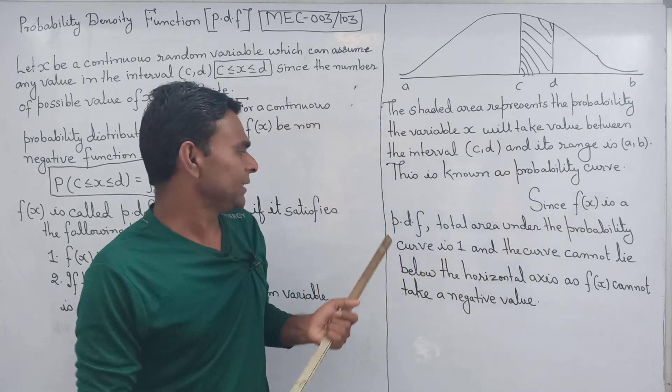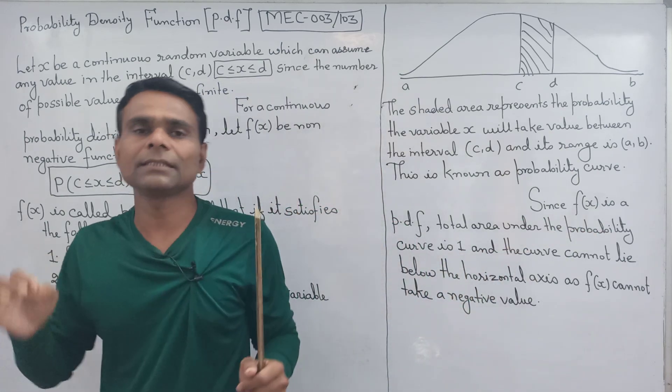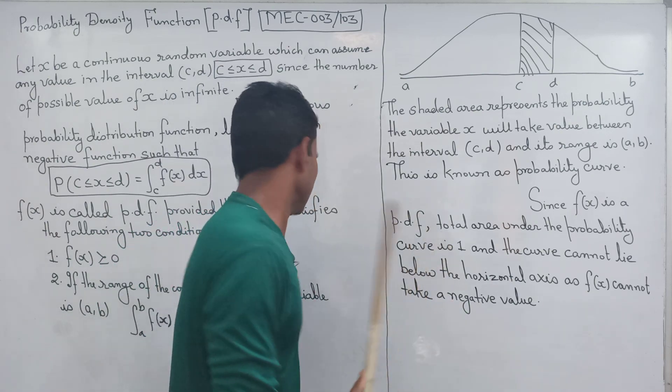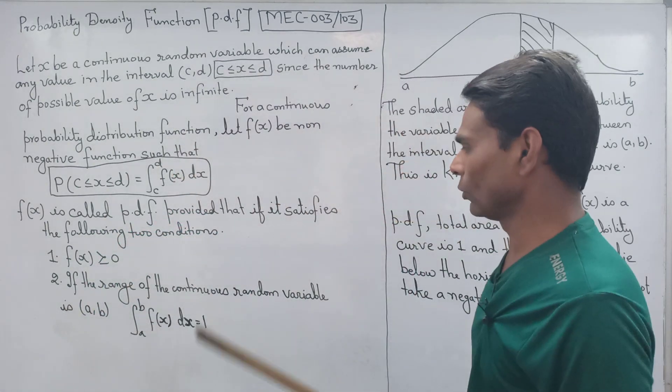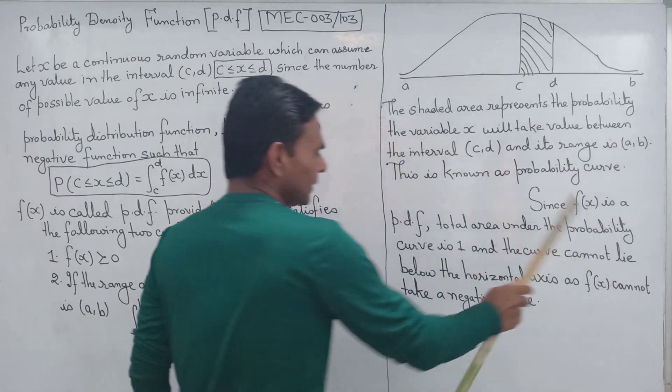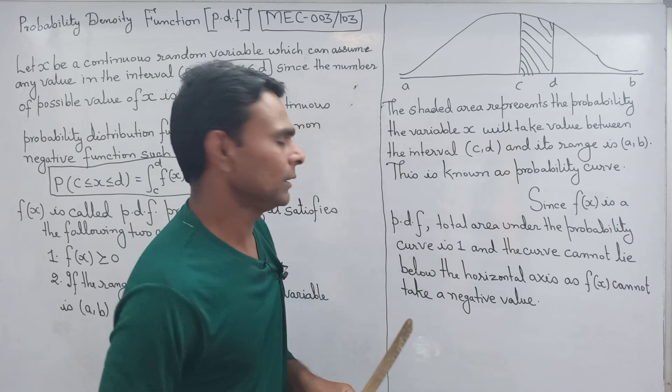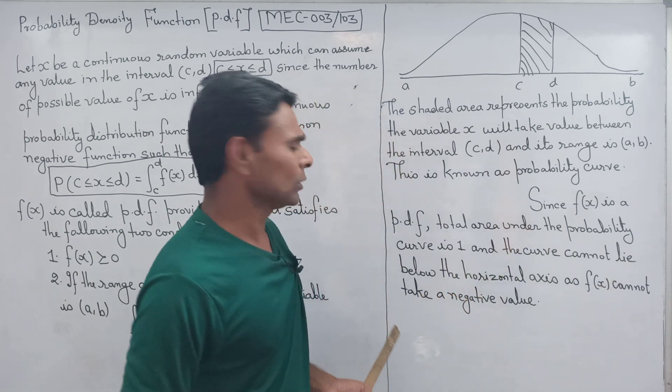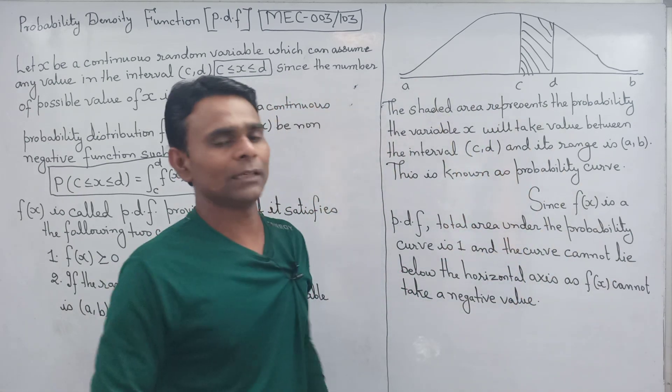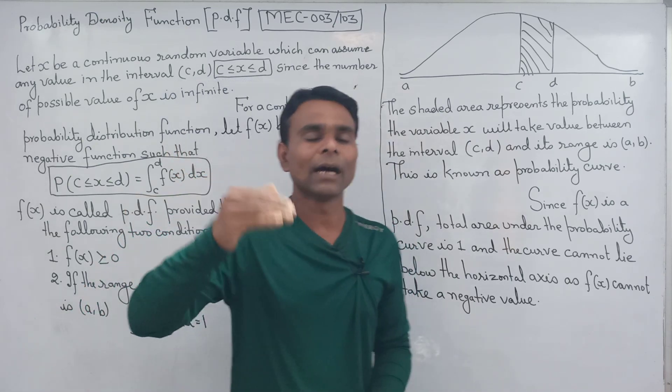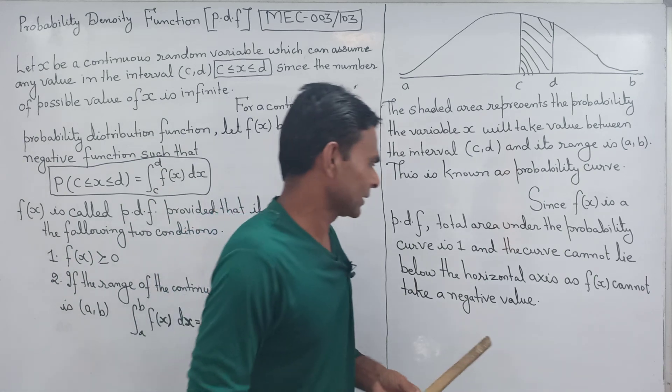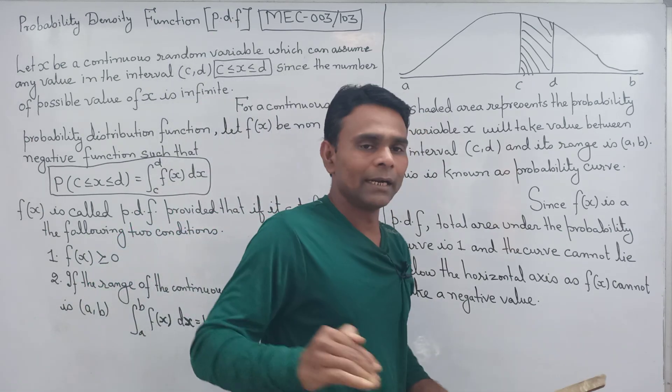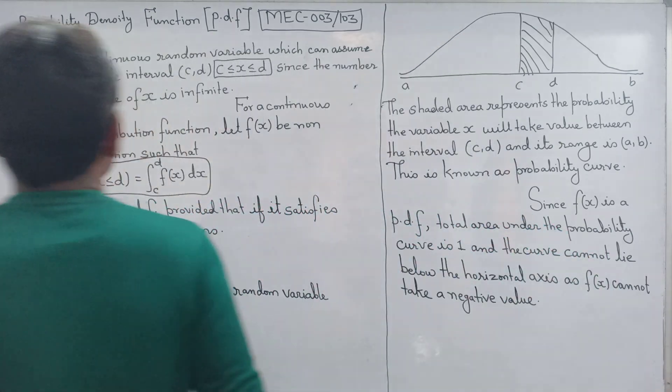Since FX is a PDF, the total area under the probability curve is 1. The curve cannot lie below the horizontal axis, or the values below the horizontal axis are non-negative or greater than or equal to 0, because FX cannot take negative values. This is the probability density function.